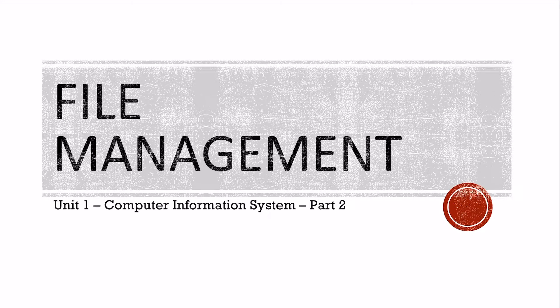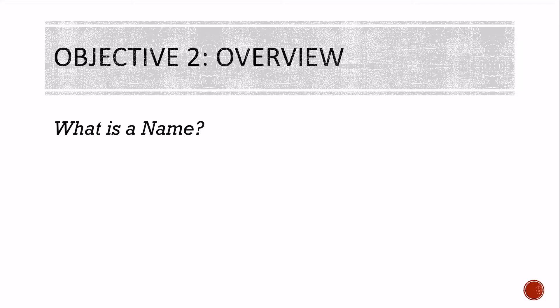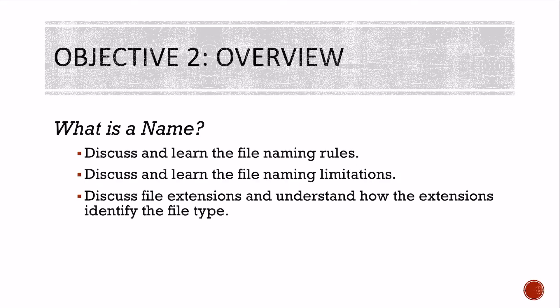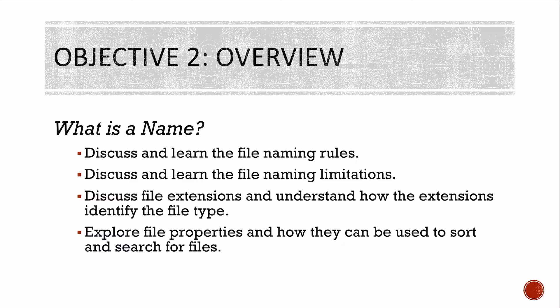The second part of this unit is file management. Our objective is what's in a name. We're going to discuss and learn the file naming rules, discuss and learn file naming limitations, discuss file extensions and understand how the extensions identify the type, and explore the file properties and how they're used to sort and search for files.